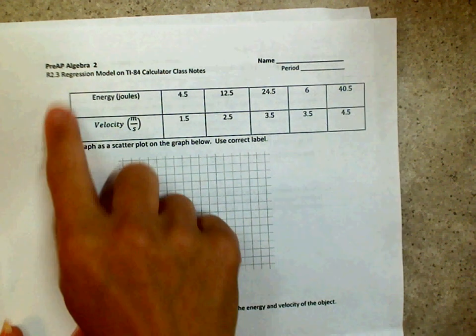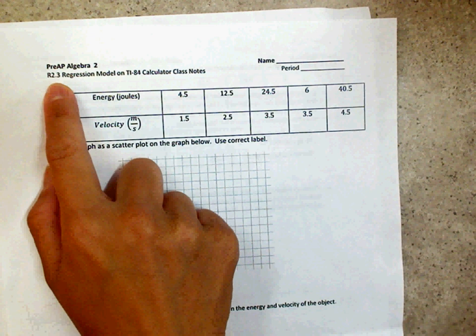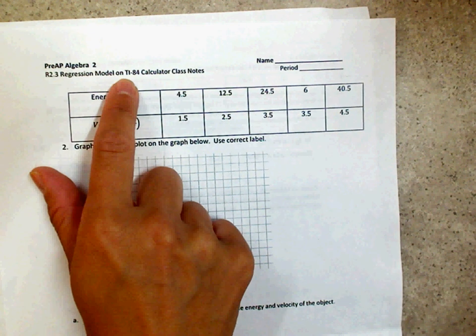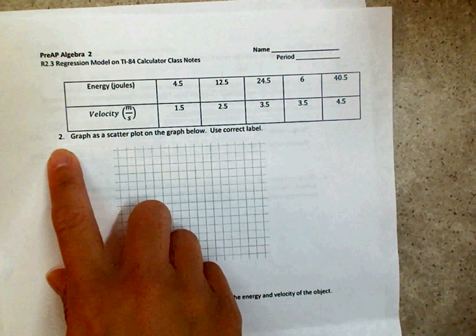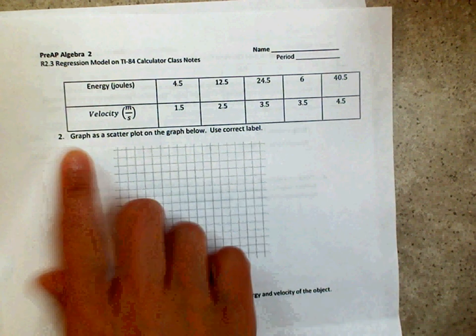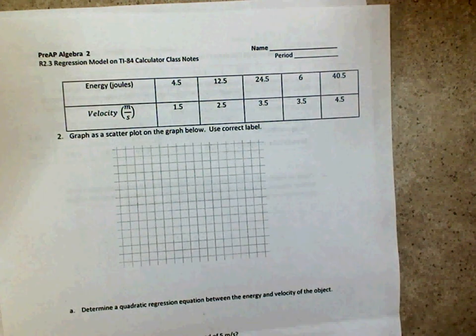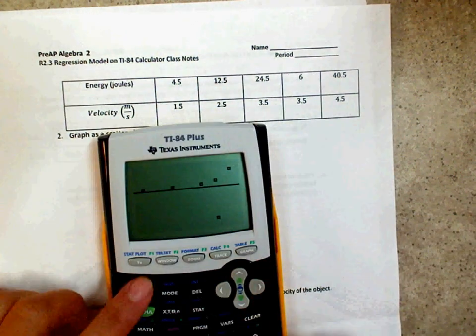Okay guys, we are going to do the 2.3, R2.3 regression model on the TI-84, and this one is number 2. Alright, as we've done on the other one, I'm going to go ahead and clear my calculator.